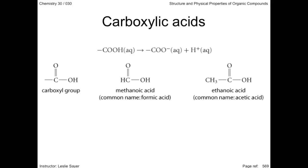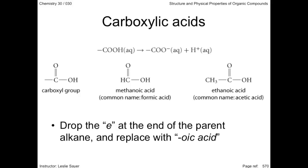A dilute solution of ethanoic acid is vinegar. Naming is very basic: name the longest chain containing the acid. Carbon number one is the carbon of the carboxyl group. The 'e' at the end of the parent alkane is dropped and replaced with 'oic acid.' Other side chains are named as before.